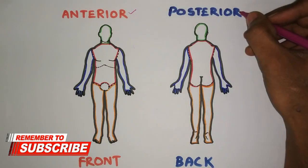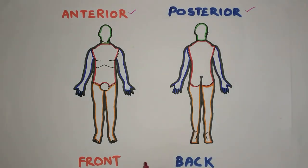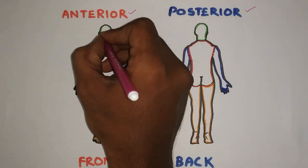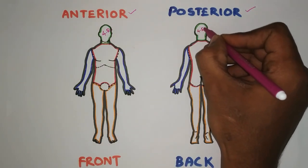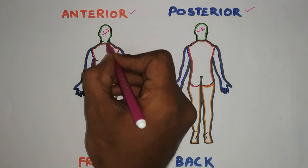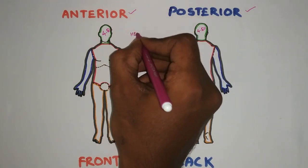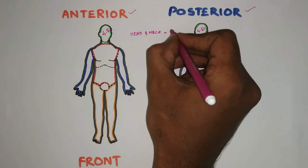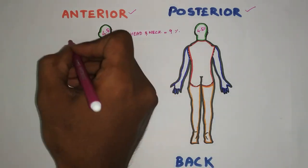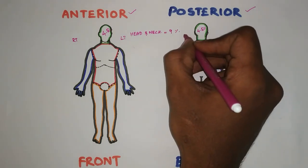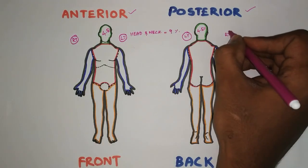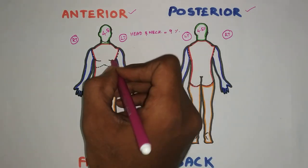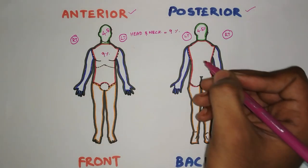Here we will see the anterior view and the posterior view of a normal adult, and how they are calculating the Rule of Nines. Each and every body surface area will be considered as a percentage of nine. The anterior surface of the head and neck is 4.5%, and similarly for the posterior side, 4.5%, giving head and neck together 9%. We also consider the right side and the left side for your calculation.